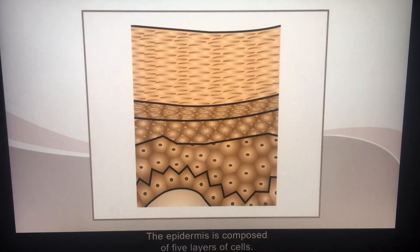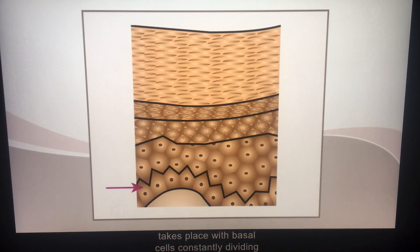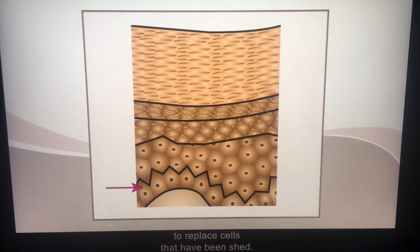The epidermis is composed of five layers of cells, each with different characteristics. The stratum germinativum is the lowest, at the dermis level. At this level, mitosis, or cell division, takes place with basal cells constantly dividing to produce new cells that are pushed to the surface to replace cells that have been shed.